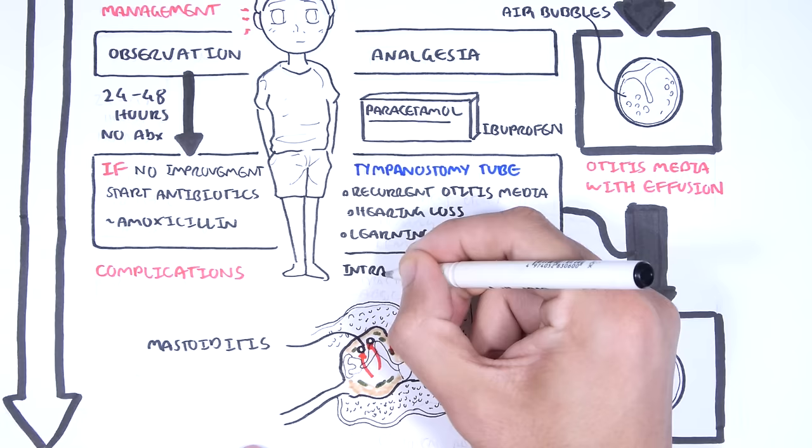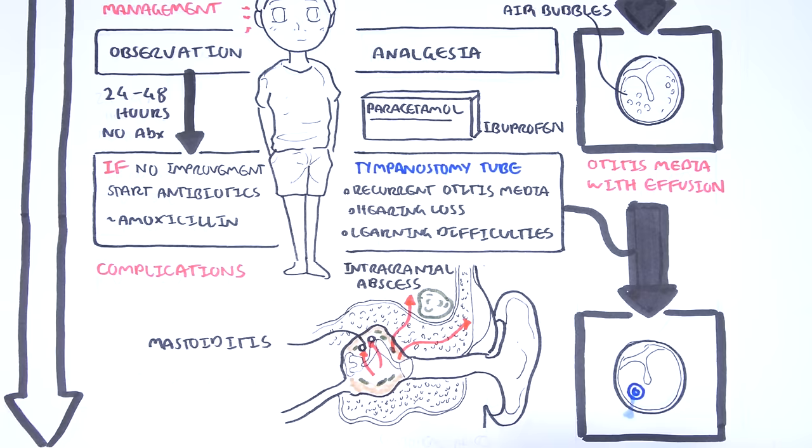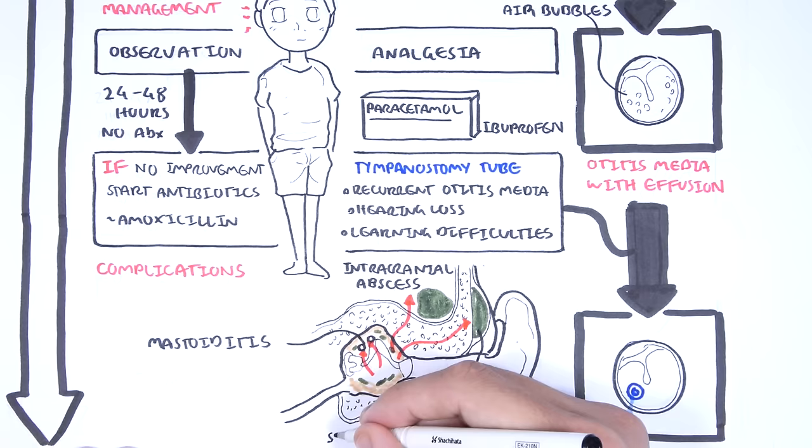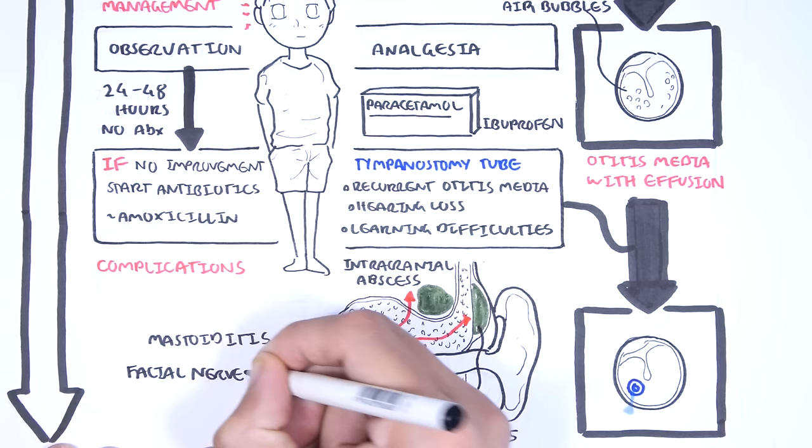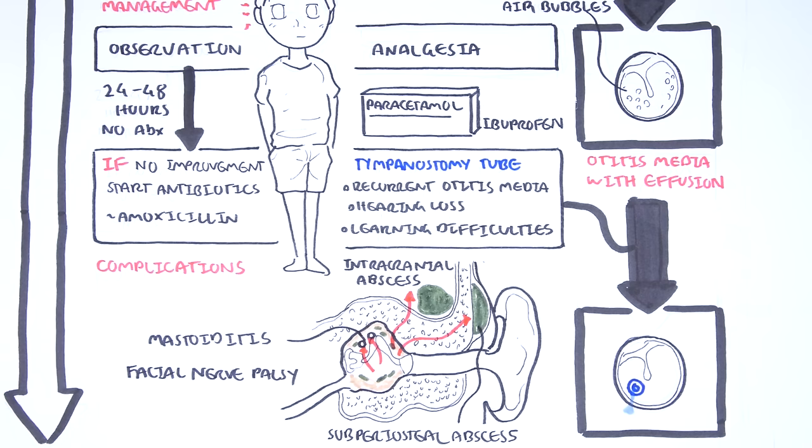Other complications of acute otitis media can include intracranial abscesses, including subdural abscesses and subarachnoid abscesses. There can also be subperiosteal abscesses. Facial nerve palsy can be also a complication, as well as labyrinthitis. A more comprehensive video on the complications of acute otitis media and mastoiditis will be available.